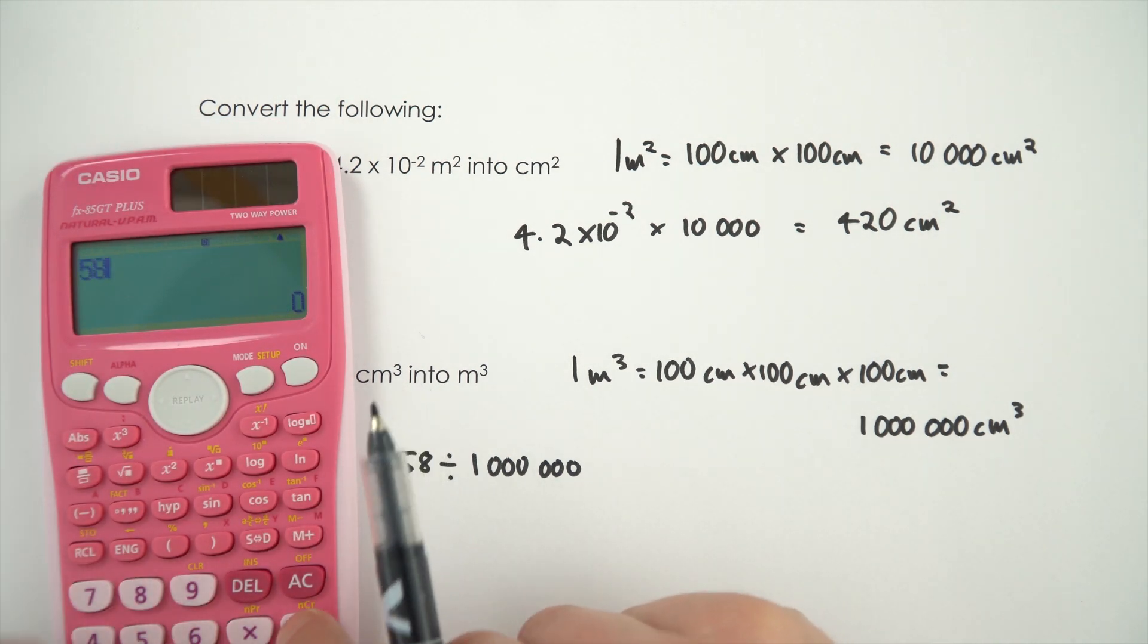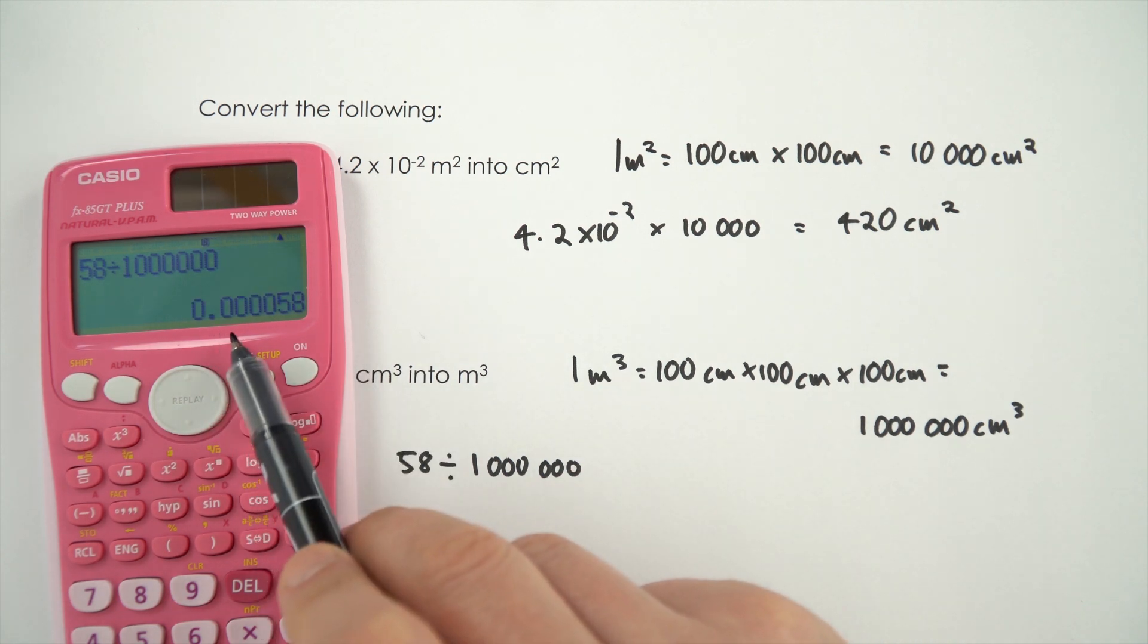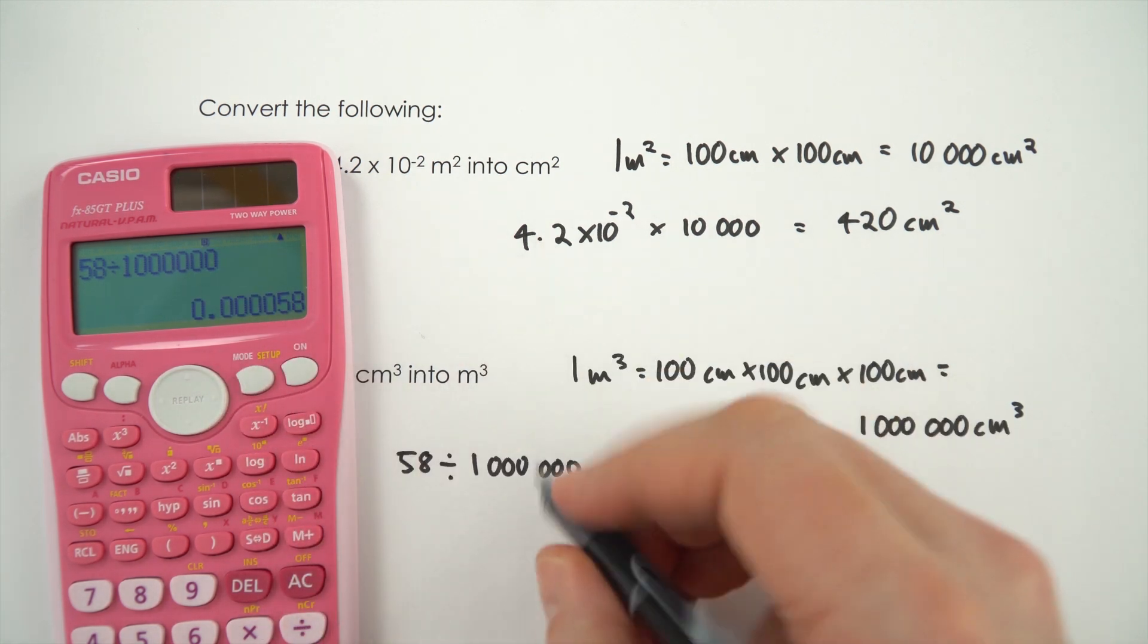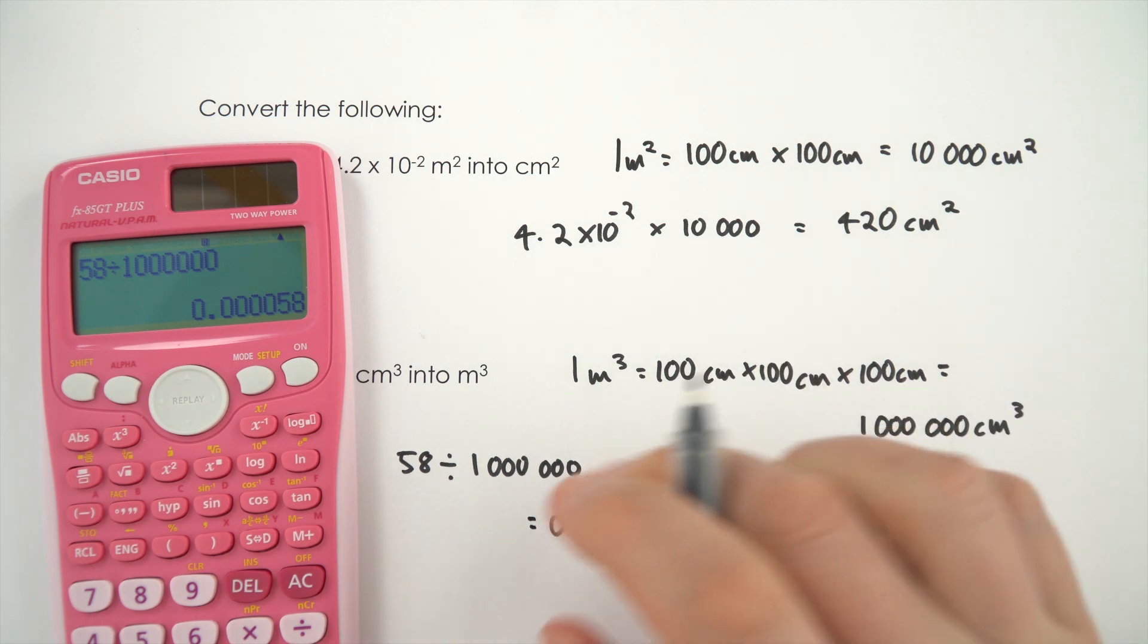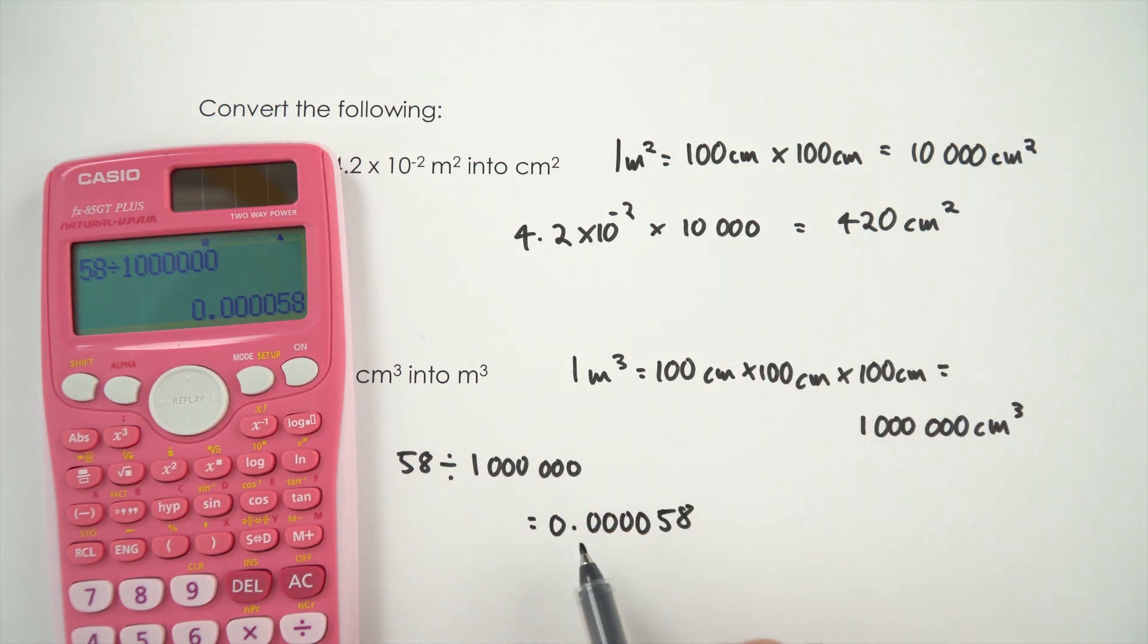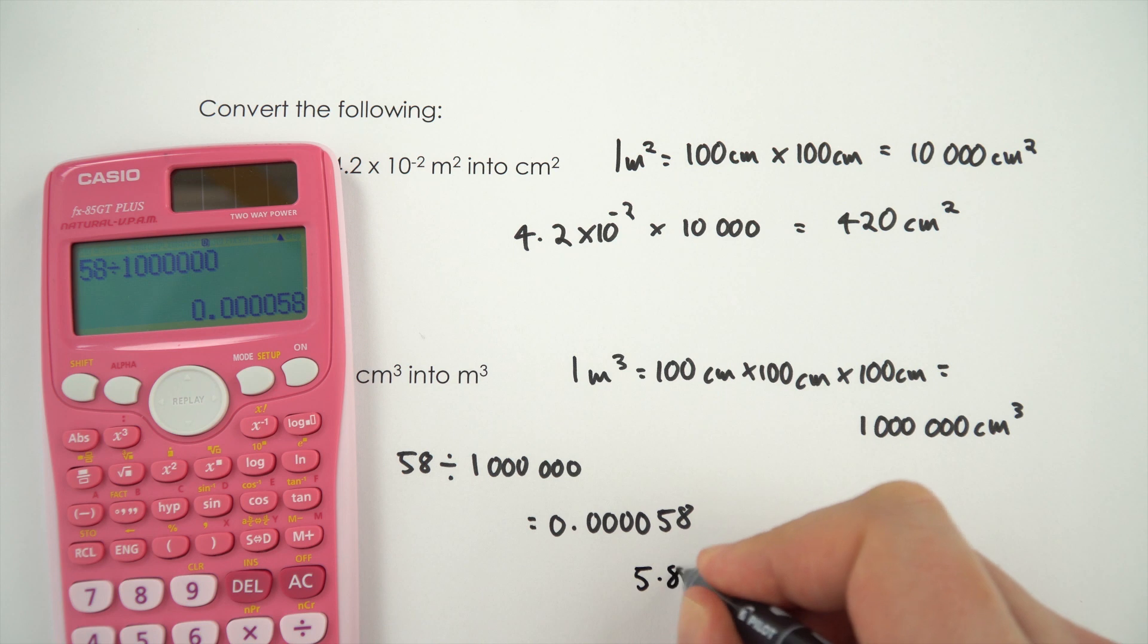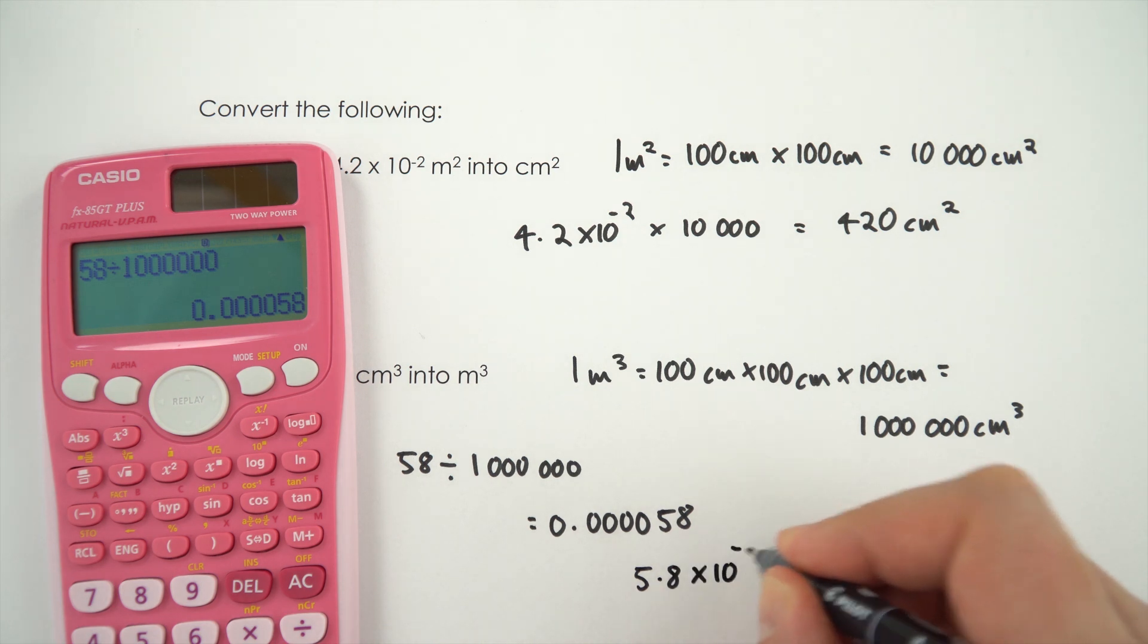On the calculator I just put the numbers in and this comes out as 0.000058 but a more appropriate way of giving this answer might be in standard form. So what we need to do is move this decimal point one, two, three, four, five places to the right so I can then write it as 5.8 times 10 to the minus 5 cubic metres.